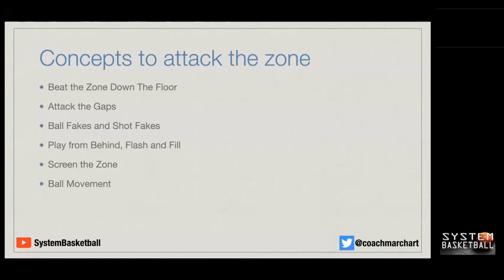One of the other things you can do — and a lot of people will tell you this — is move the ball faster than the zone can react. Another way is to move players to distort the zone by overloading, putting them into certain spots on the court, and then taking advantage of the zone by your alignment or by running sets.